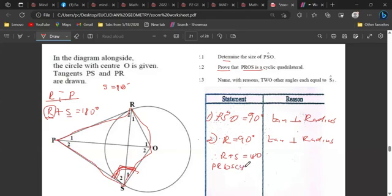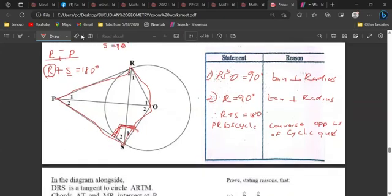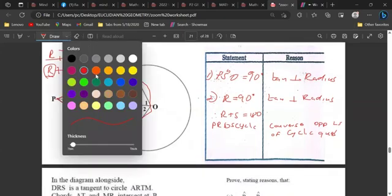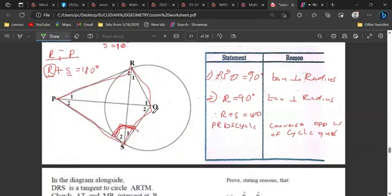How do you prove a cyclic quad? The converse of opposite angles of a cyclic quad. Okay. Then it means, we can come and put a circle here. And say we have a circle around this thing here.